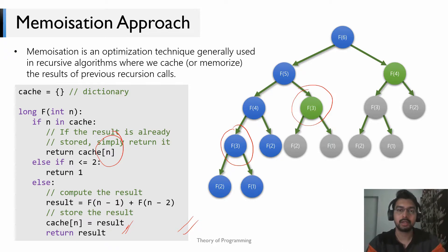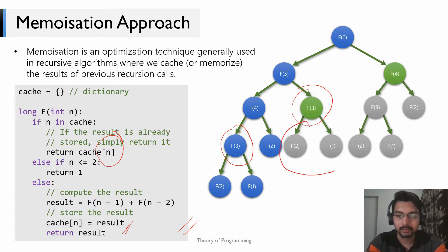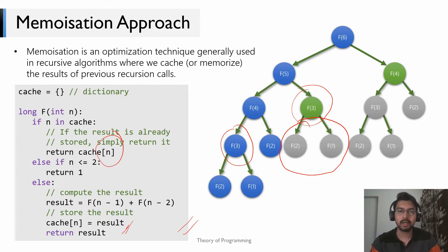If you're using a dictionary, adding and querying take constant time, so the second call to F(3) costs nothing. As a result, the grayed-out function calls like F(2) and F(1) don't even happen. In this figure, the green circles are function calls that take constant time, and the gray ones are calls that don't happen because you return early in the recursion tree.